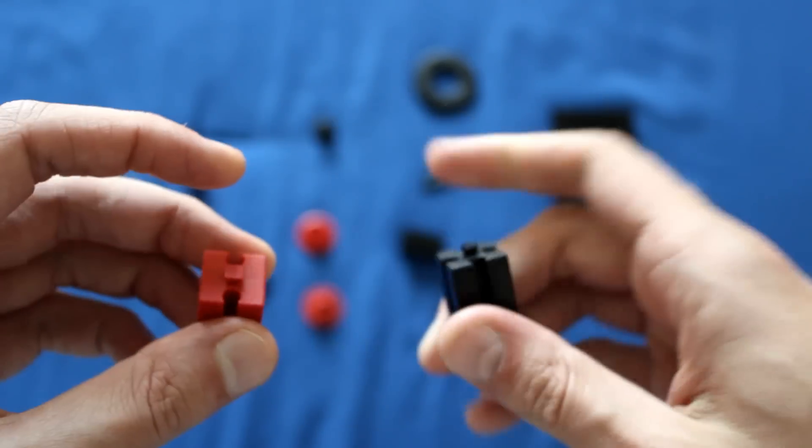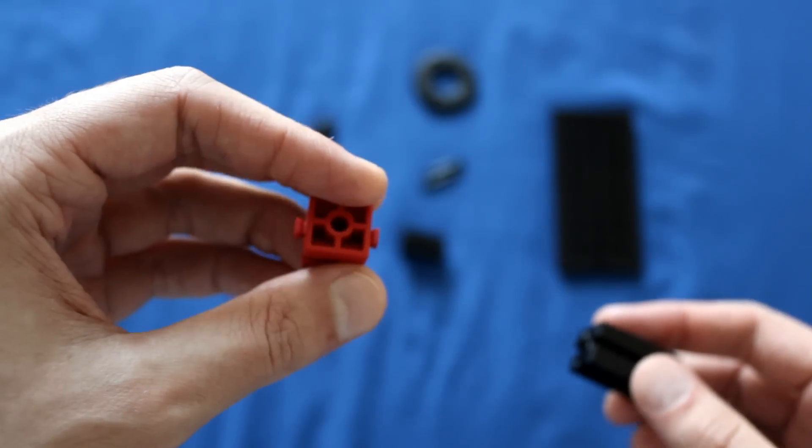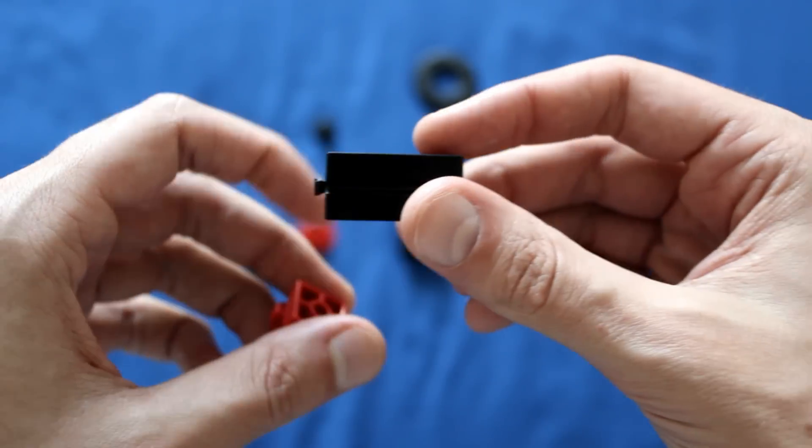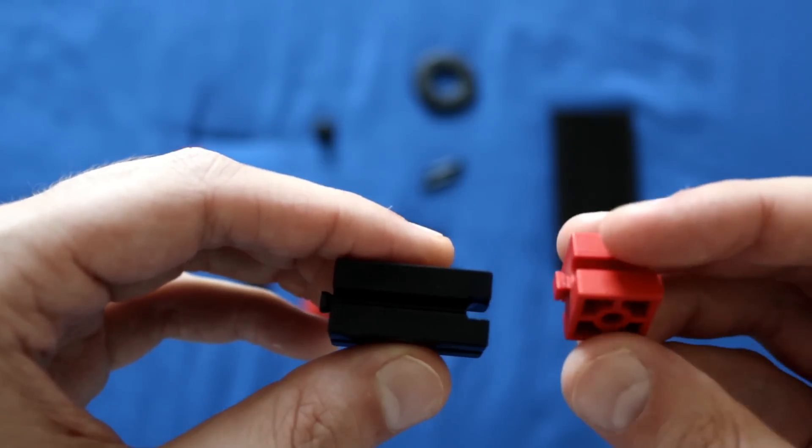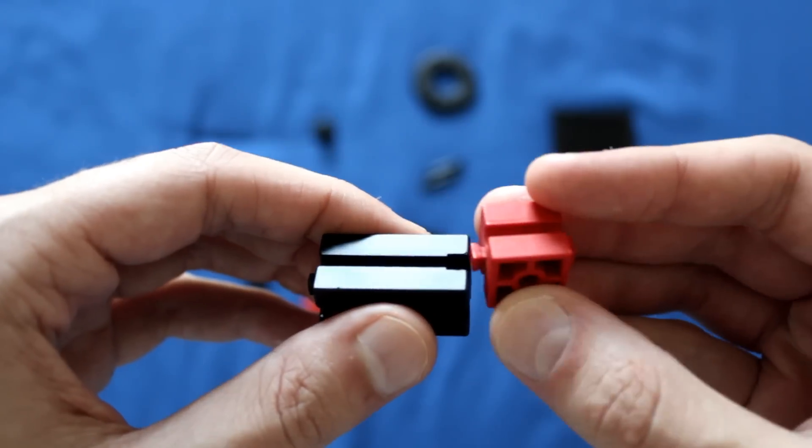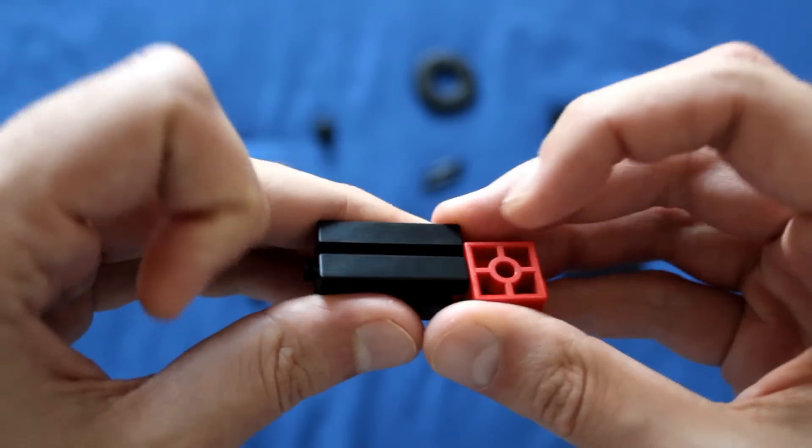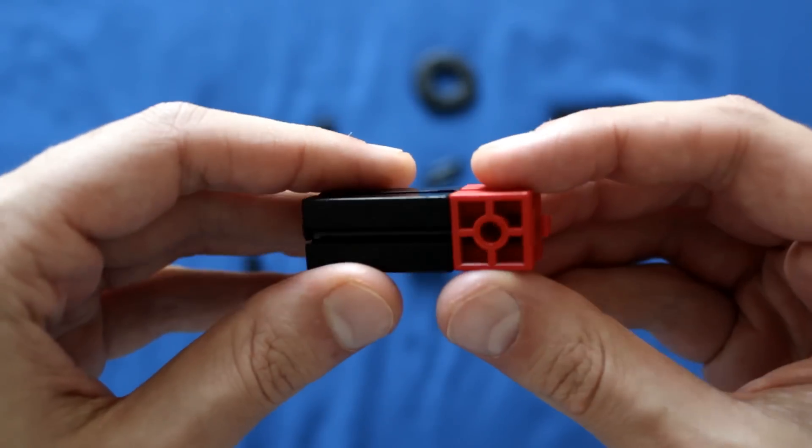So to get started, we're going to grab one of our building block 30s, which is this piece, and then one of our building block 15s with borehole, which is this piece over here. We're going to take the building block 30, and with the notch facing out this way, we're going to take our building block 15, and we're going to slide it in through the back side here of the building block 15 like such.